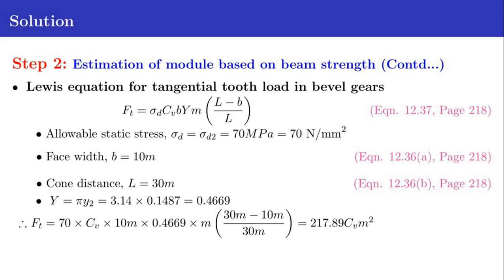b is the face width, assumed as 10M, 10 times module, from equation 12.36A in page 218. L is the cone distance, assumed as 30 times M from equation 12.36B in page 218. Capital Y equals pi times Y2 equals pi times 0.1487 equals 0.4669.